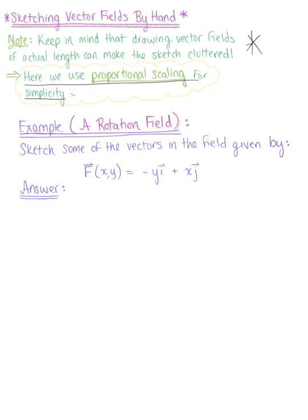Keep in mind that finding vectors of equal magnitude actually corresponds to finding level curves in a scalar field. In this first example, we are looking at a rotation field — a common vector field we'll use for the rest of the semester. We're asked to sketch some of the vectors in the rotation field given by this vector-valued function.